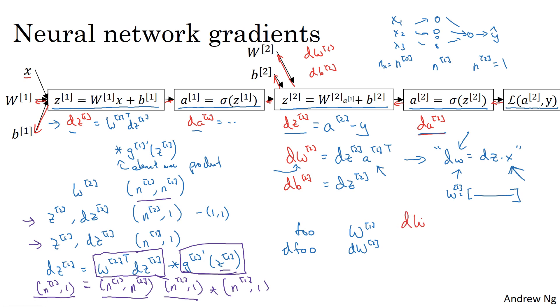And then finally, just to wrap up, dw1 and db1. We should write them here I guess, but since I'm running out of space, I'll write them on the right of the slide. Dw1 and db1 are given by the following formulas. This is going to be equal to dz1 times x transpose, and this is going to be equal to dz1. You might notice a similarity between these equations and these equations, which is really no coincidence because x plays the role of a0. So x transpose is a0 transpose, so those equations are actually very similar.